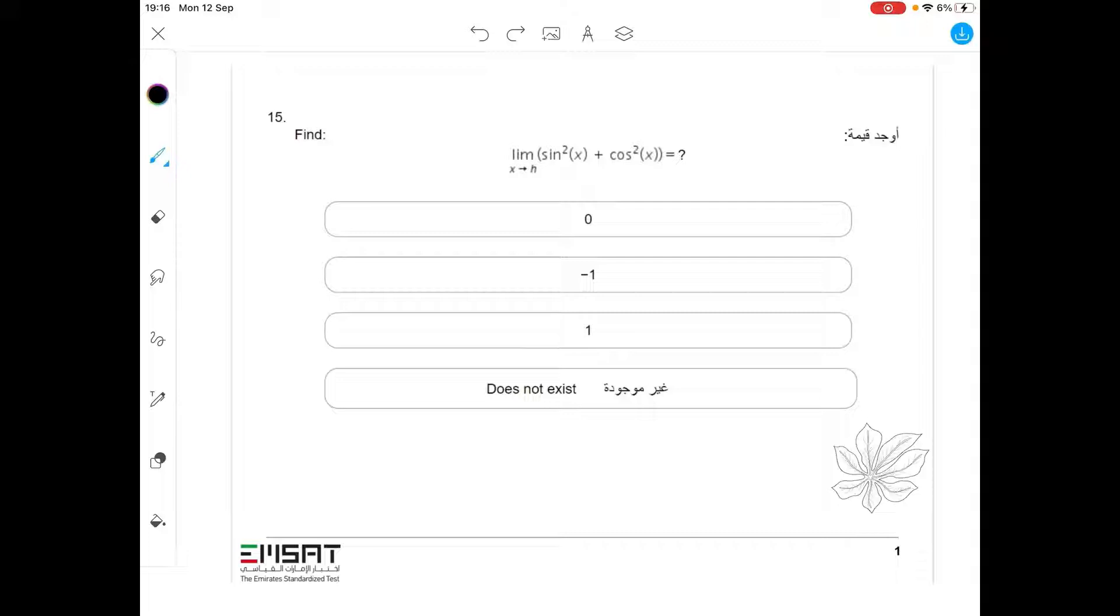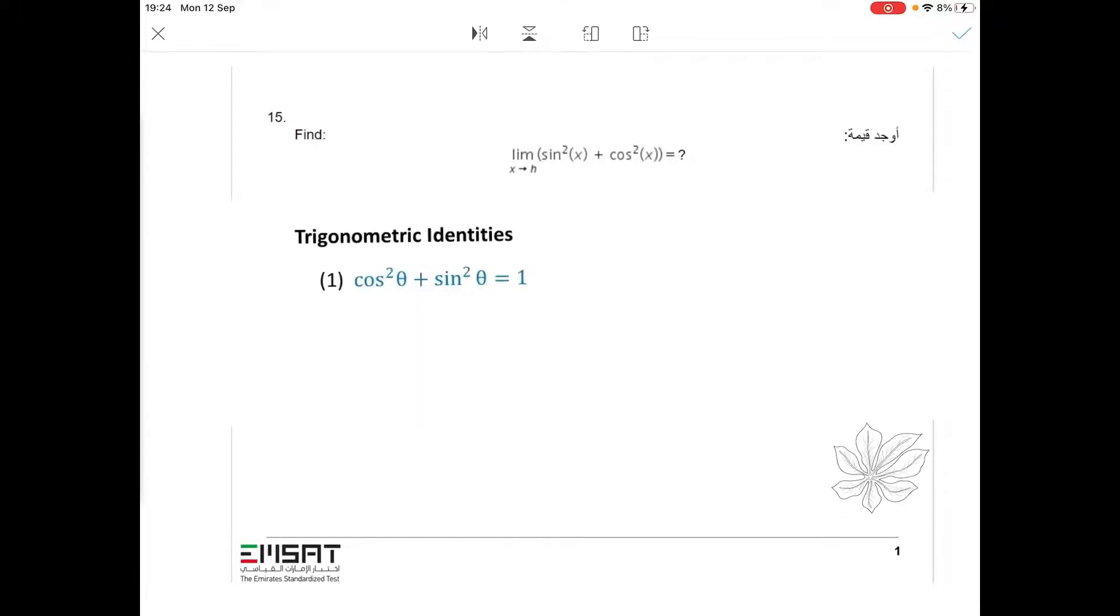So, how do you know which one is the answer? It is simple. One of the trigonometric identities says that cosine squared theta plus sine squared theta equals 1, and this is the case in our question.